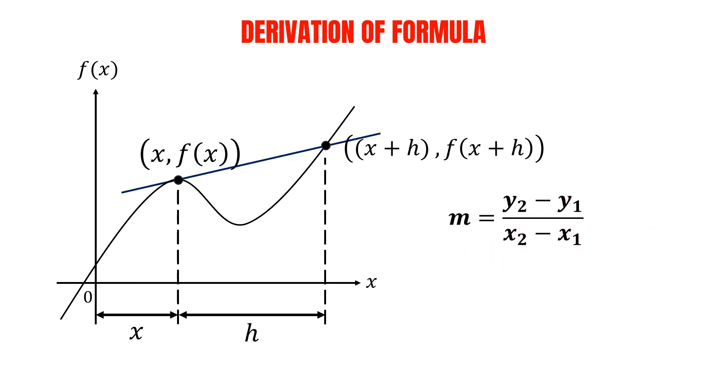So we label the coordinate of the first point as x1, y1, and x2, y2 for the coordinate of the second point. To find the gradient of the secant line, we substitute the coordinates into the formula accordingly. For the y2, we got f of x plus h. We substitute it into the formula. For y1, we got f of x. And we substitute it into the formula.